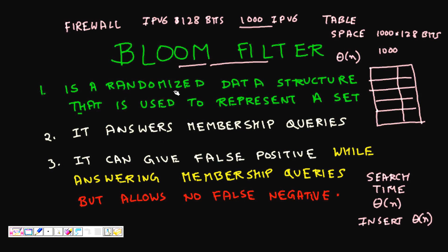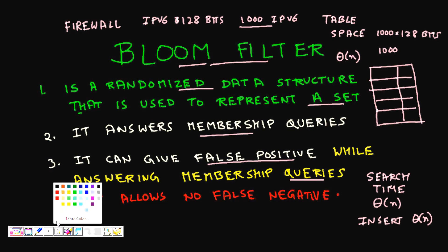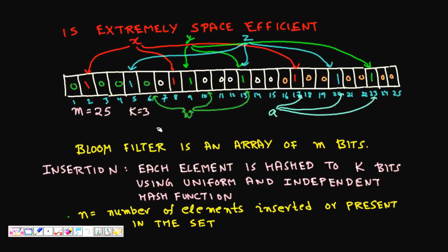A Bloom filter is a randomized data structure used to represent a set of elements. It uses very little space and answers: is that element present or not? When a packet comes, you ask the Bloom filter if it is there — if yes, you block it. But everything comes with a trade-off: you will have a bit of false positive when answering membership queries. False positive means sometimes even if an element is not there, the membership query can say it is present — but this happens with very small probability.